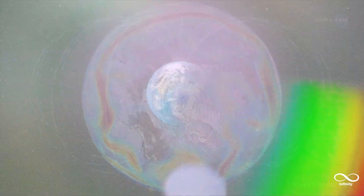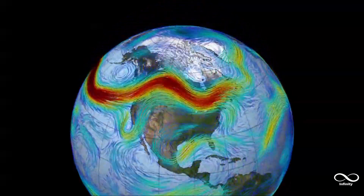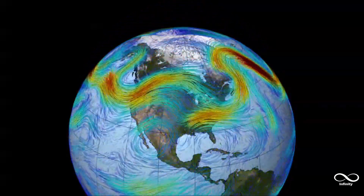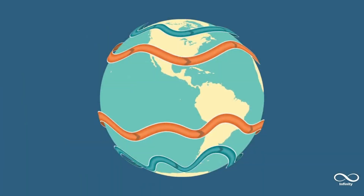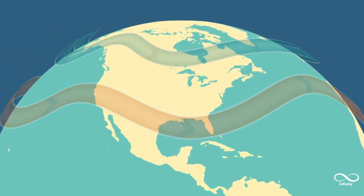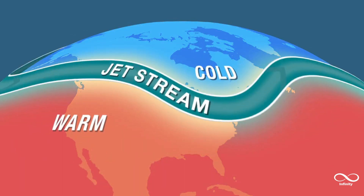The vortices are surrounded by the so-called polar jet streams. But what are these air currents, and why are they so important? Jet streams are narrow, fast-moving air currents that flow near the tropopause — the transition between the troposphere, where temperature decreases with altitude, and the stratosphere, where temperature increases.